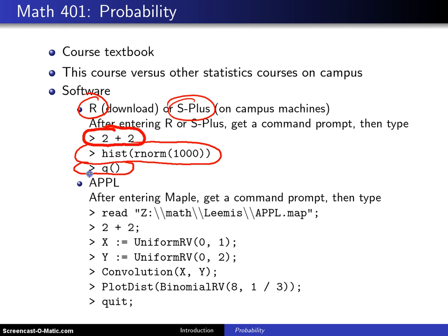The second piece of software is APPL, which stands for A Probability Programming Language. In order to access APPL, you've got to have access to the Maple software, that's a symbolic processor, at William & Mary. Once you're on the system, you can access that software with that read command.